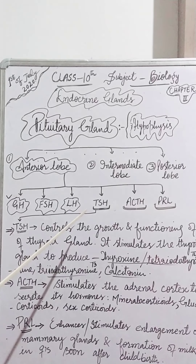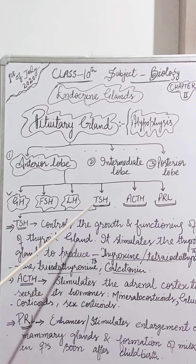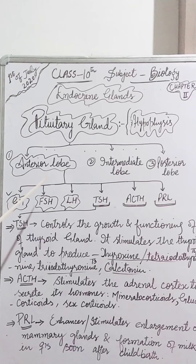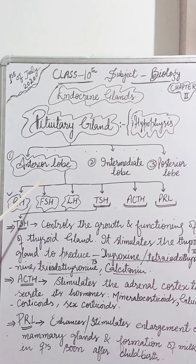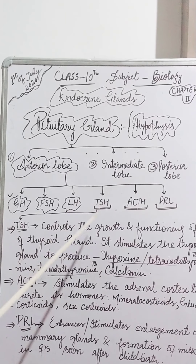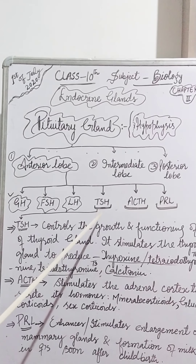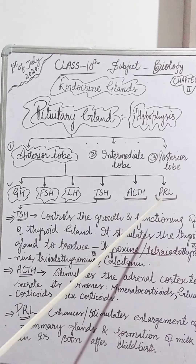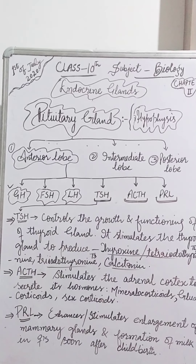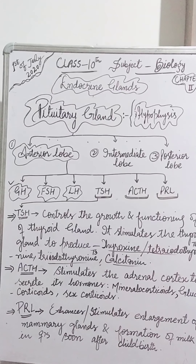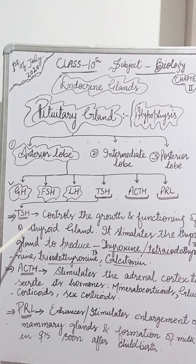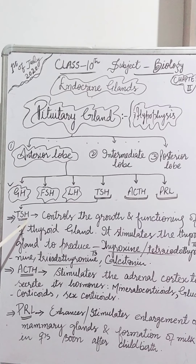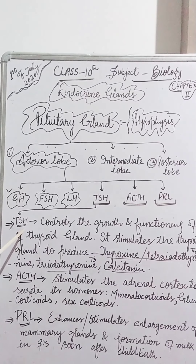Today we will discuss the remaining three hormones secreted by the anterior lobe of the pituitary gland: thyroid stimulating hormone, adrenocorticotropic hormone, and prolactin. Thyroid stimulating hormone is also called TSH.